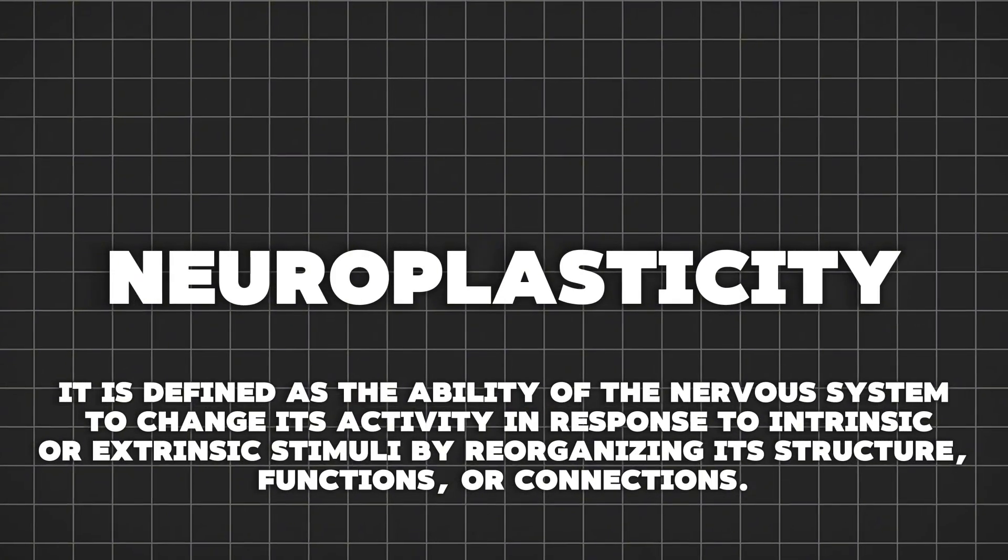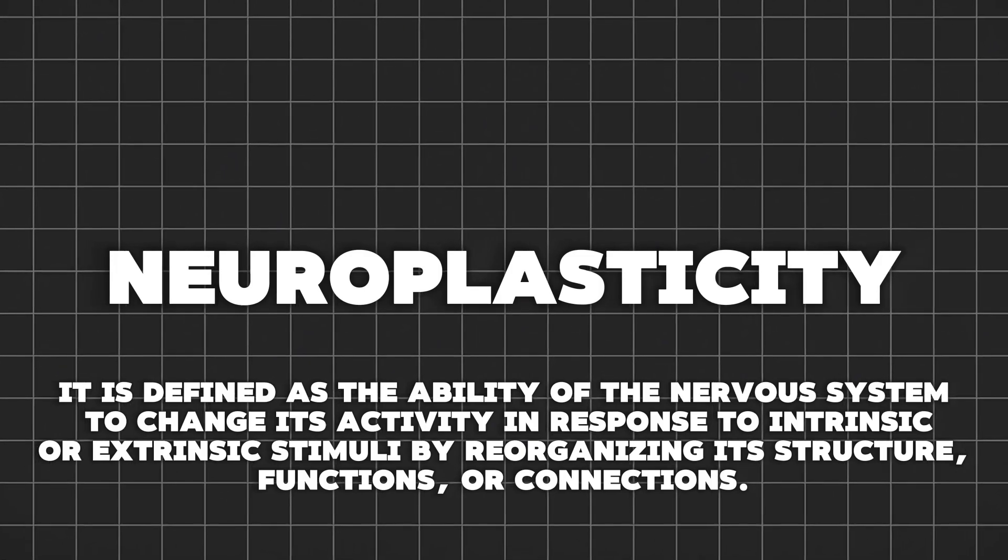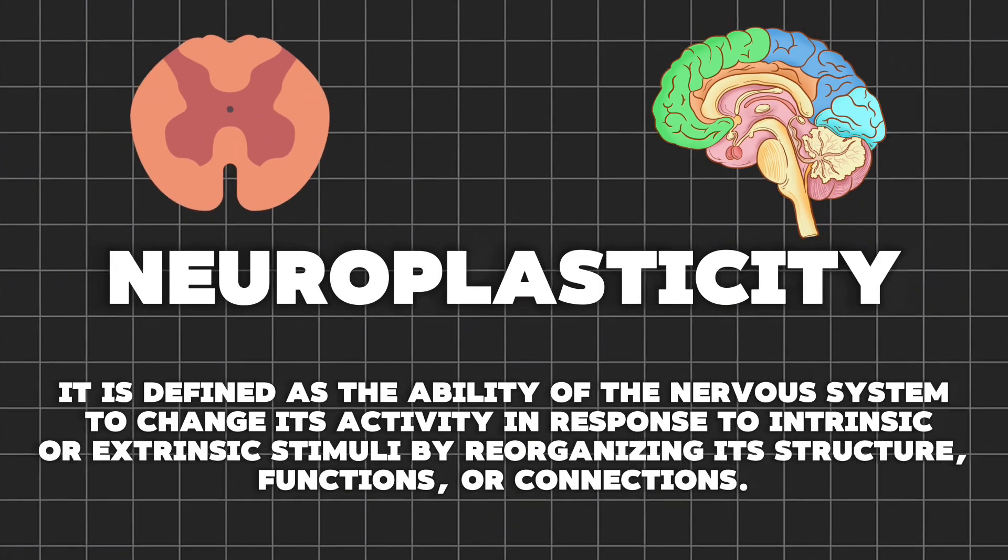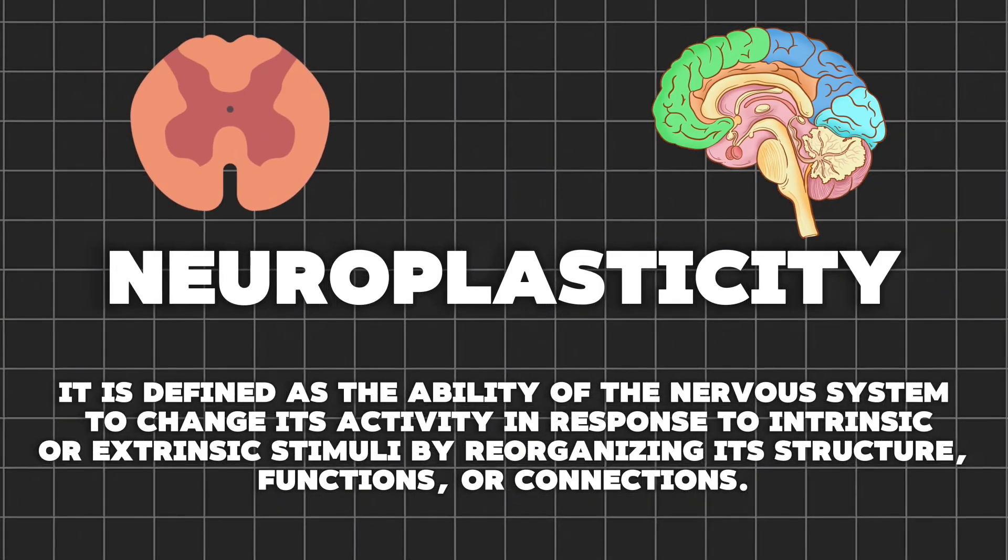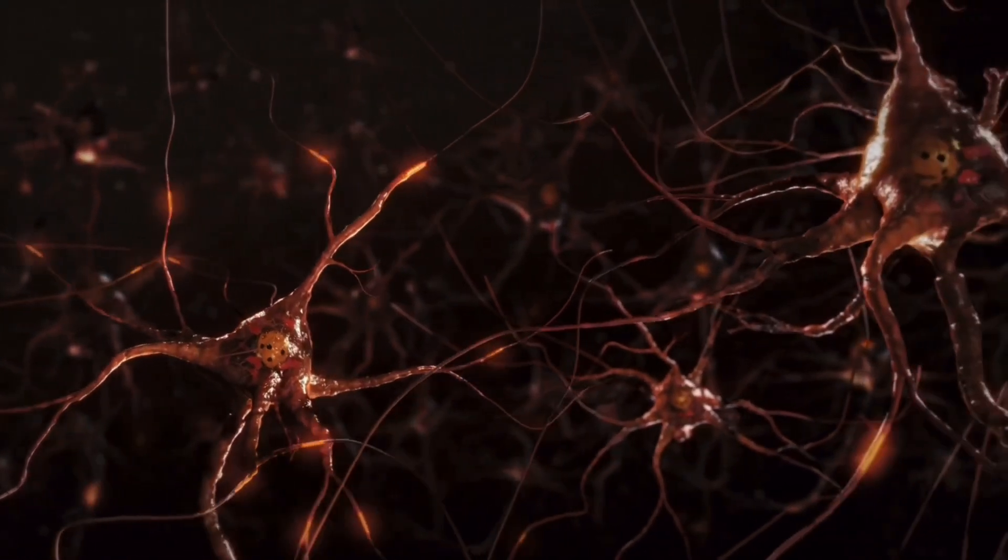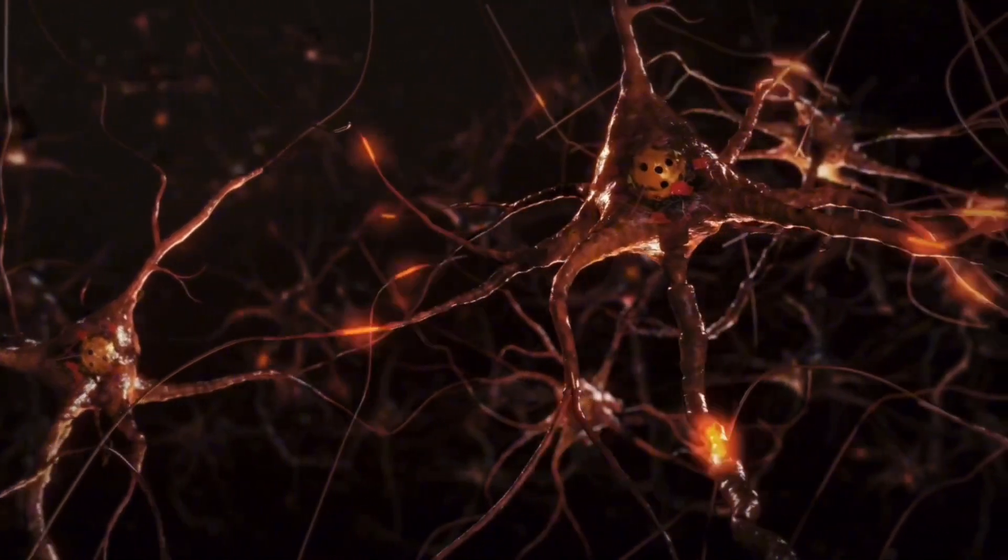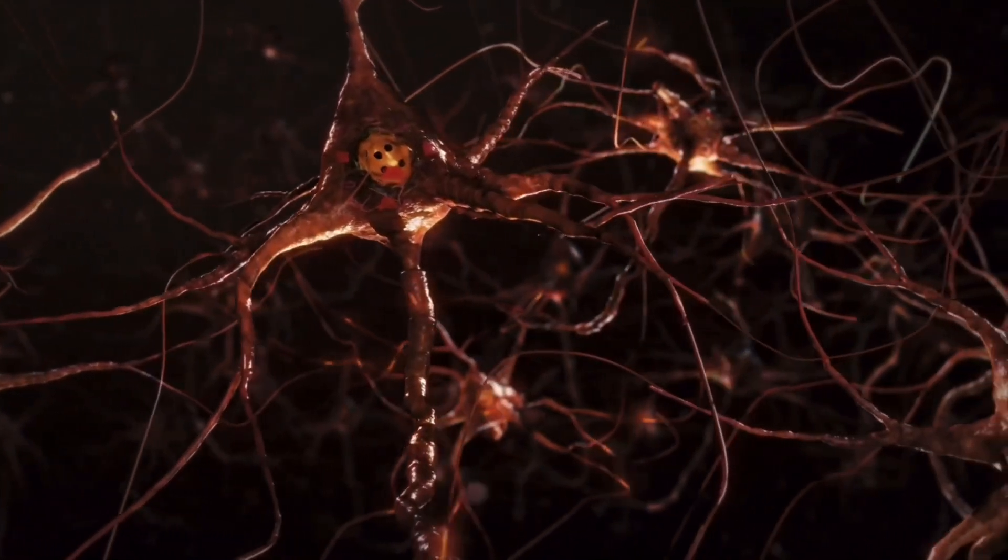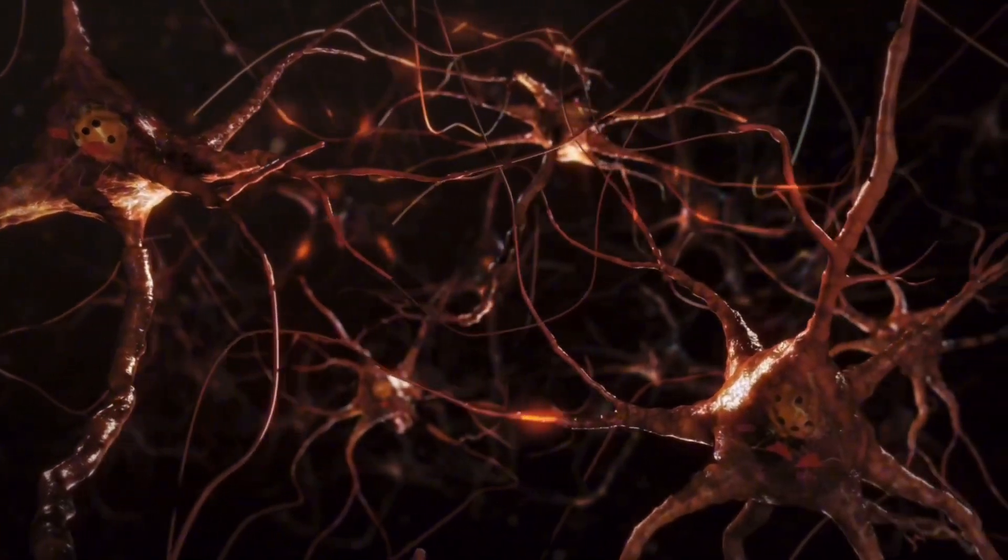Neuroplasticity is this incredible feature of your nervous system, which of course includes your brain and your spinal cord, which is the ability for your nervous system to change in response to experience. So any form of learning involves neuroplasticity. The change that underlies neuroplasticity at the level of cells, which we call neurons or nerve cells, generally involves three different mechanisms.